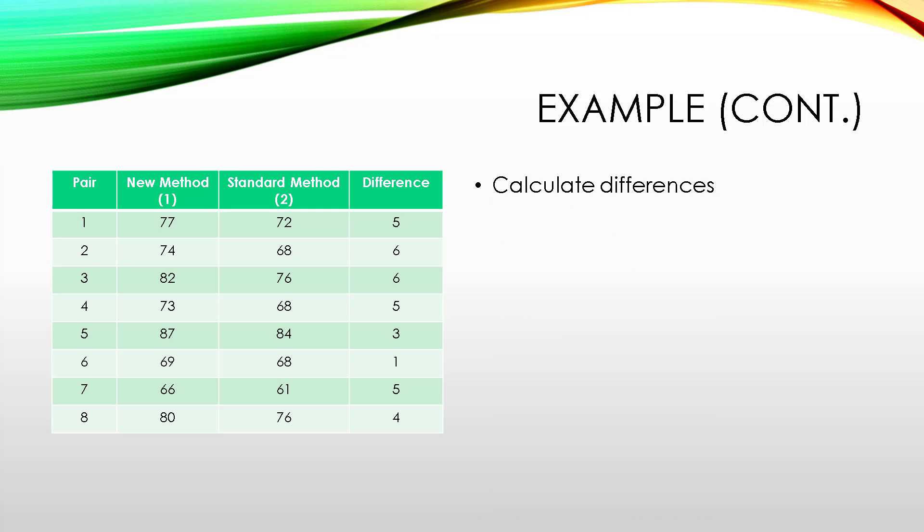So, if we're doing this by hand, we're going to first calculate the differences. If we look at the very first row of data, the first row shows that for the first pair of people, the mean reading test score was 77 for the first person, and 72 for the second person using the standard method, for a difference of 5. Even though in this sample all the differences are positive, it is entirely possible that the new method for one pair of learners might be lower than the standard method, in which case the difference would be negative.